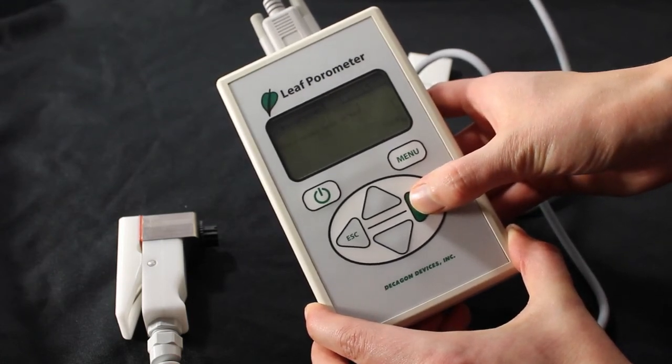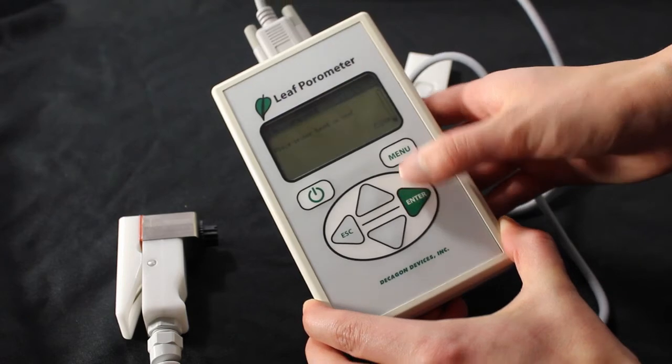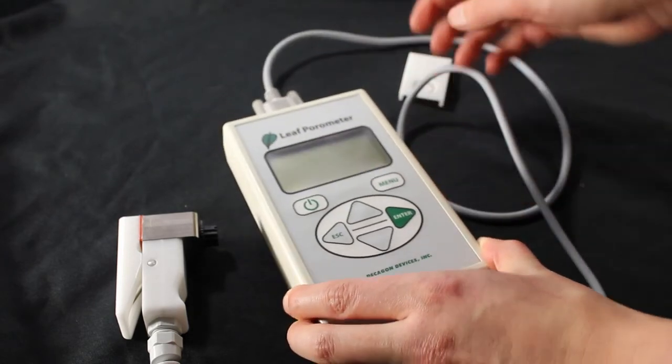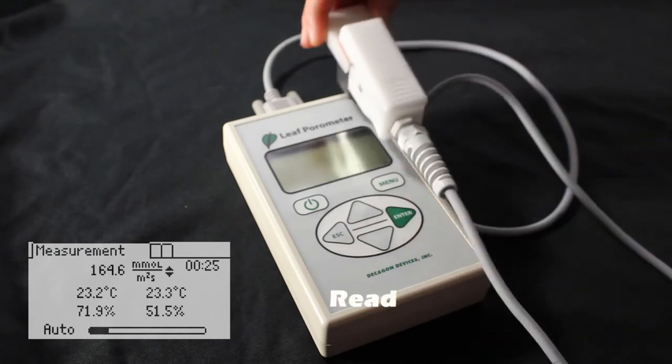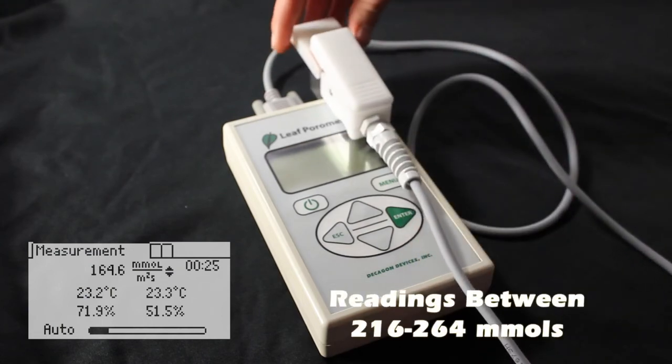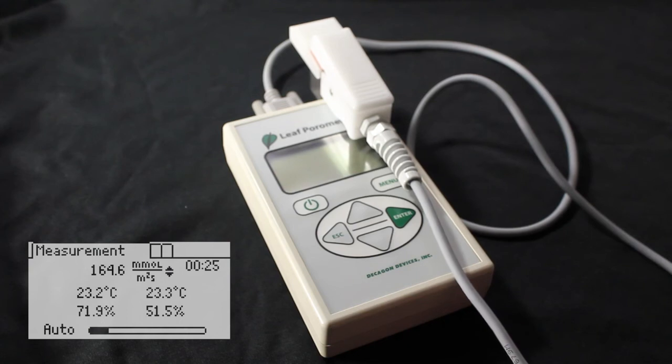Immediately after the calibration is saved, verify the reading. Go to the measurement menu on the screen and press enter to take a reading. Clamp the sensor head over the calibration plate. The reading should be between 216 to 264 millimoles per meter squared per second.